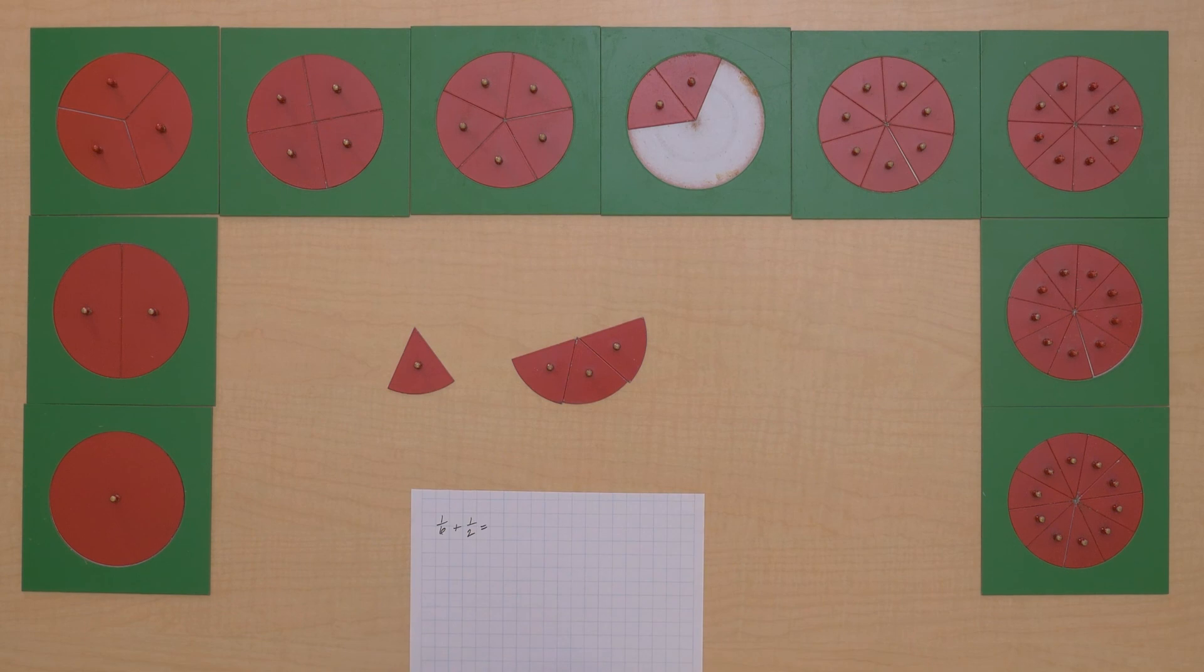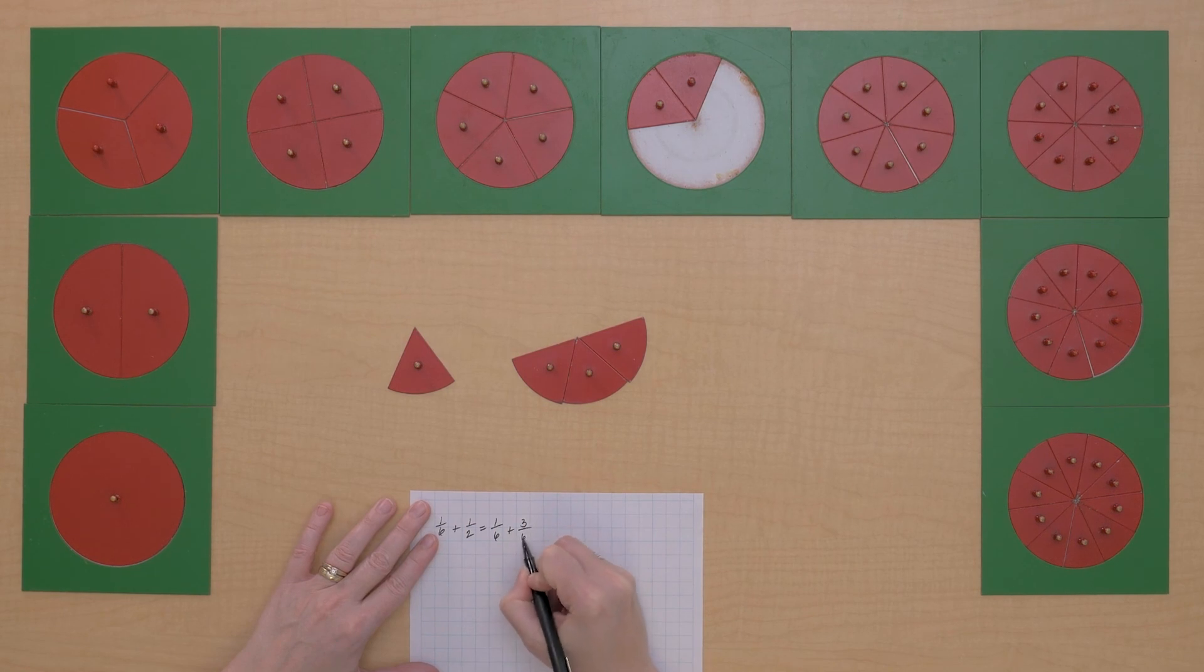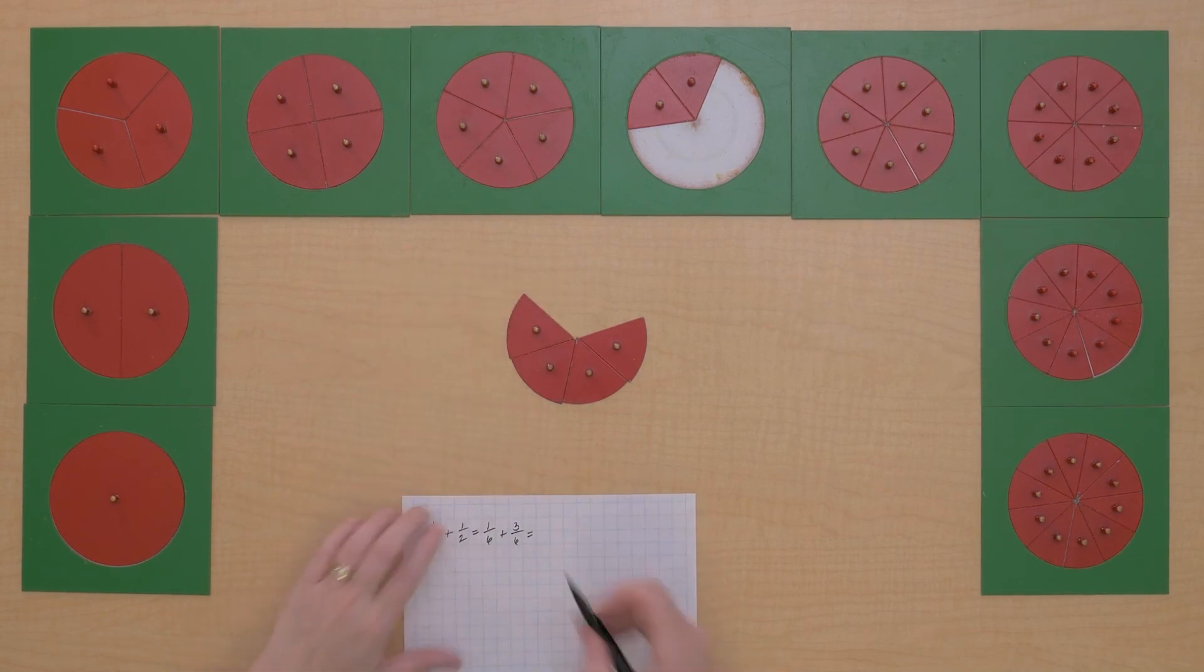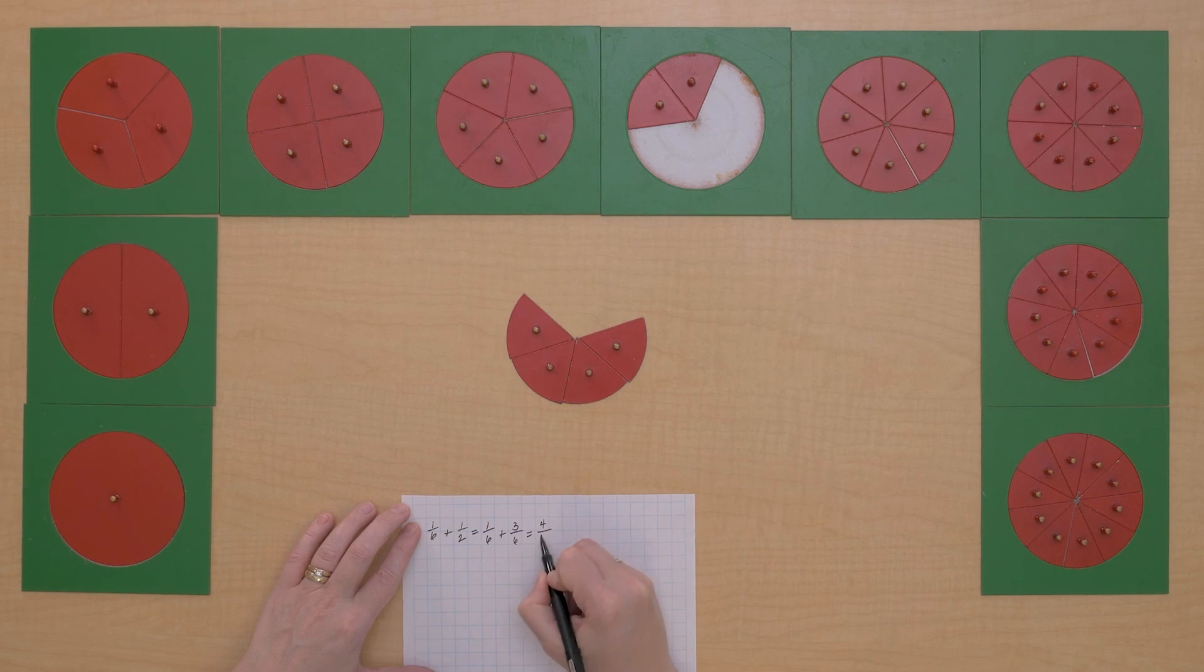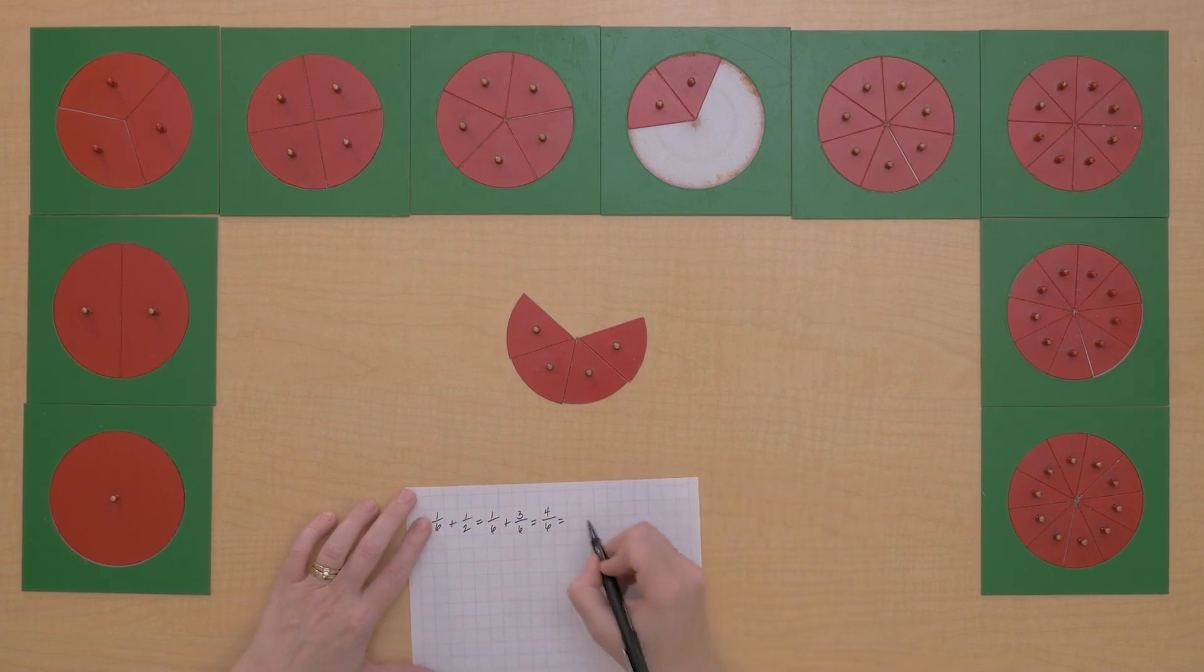And let's write down what we've done. So now we have one-sixth plus three-sixths. We can do that. It's four-sixths. And is this lowest terms? No, it's two-thirds is an equivalent fraction.